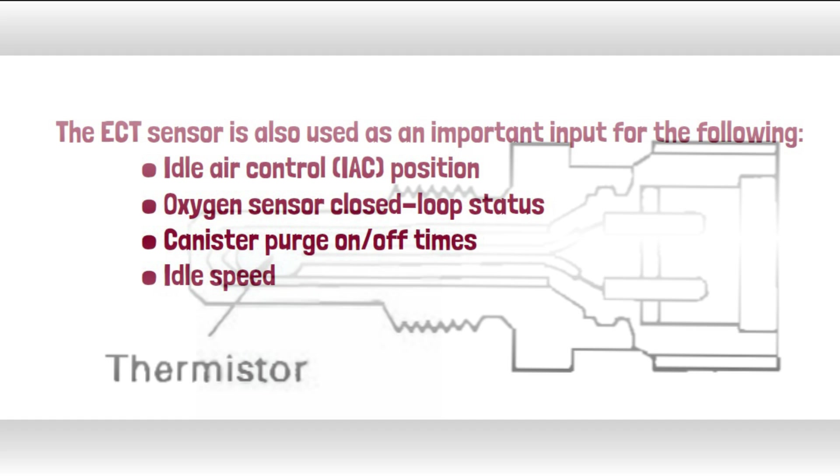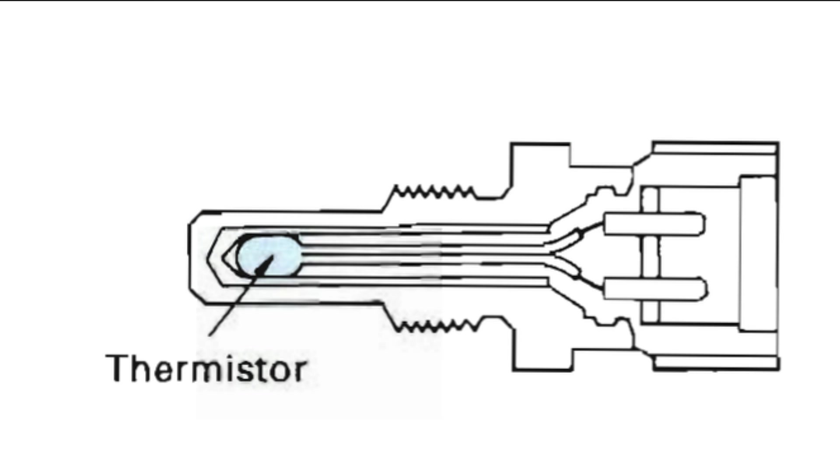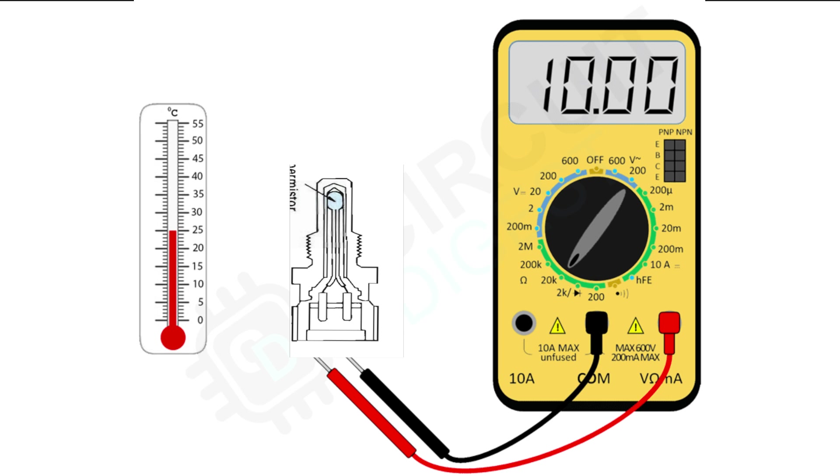Engine Coolant Temperature Sensor Construction: Engine coolant temperature sensors are constructed of a semiconductor material. A thermistor is the heart of this sensor and is responsible for converting temperature changes into electrical resistance variations. Most commonly, negative temperature coefficient thermistors are used, meaning their resistance decreases as the temperature increases.